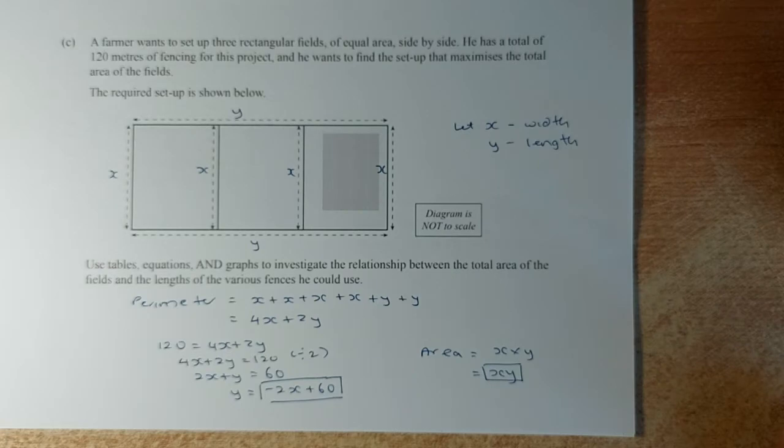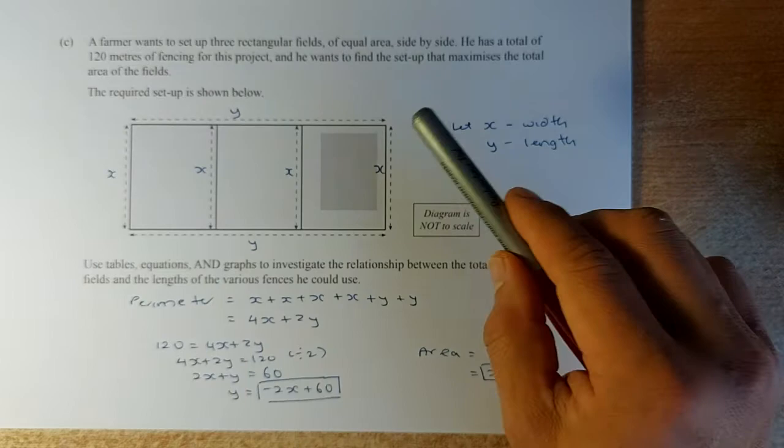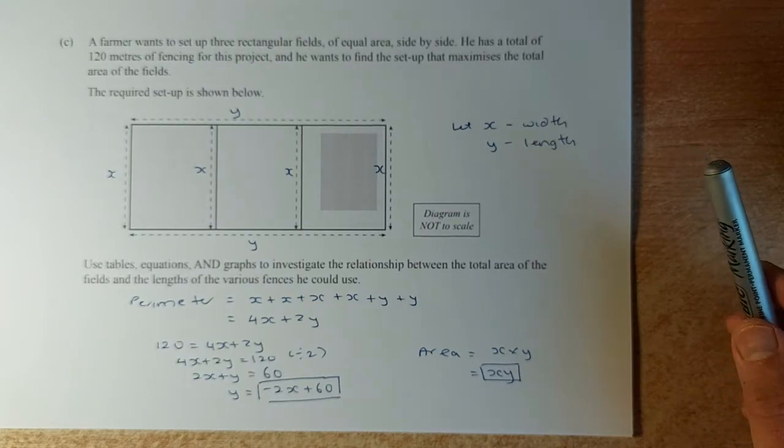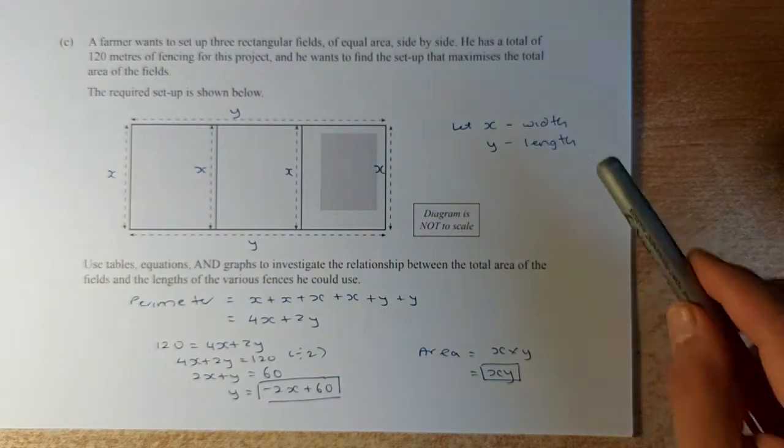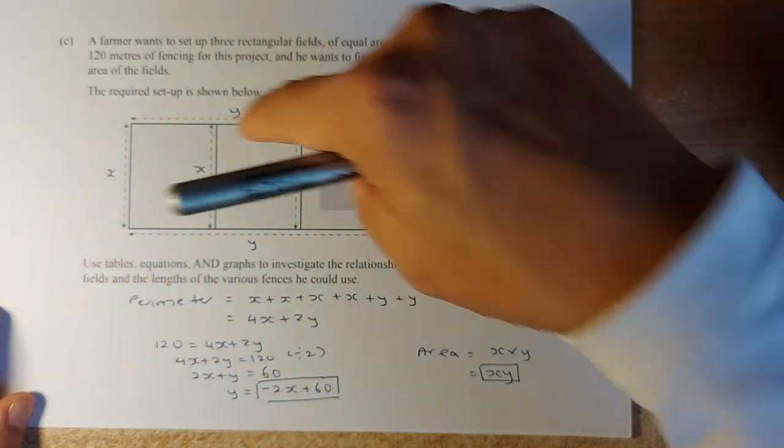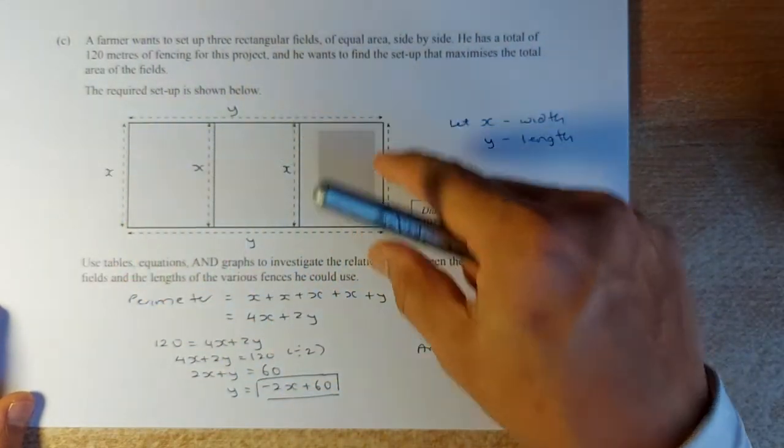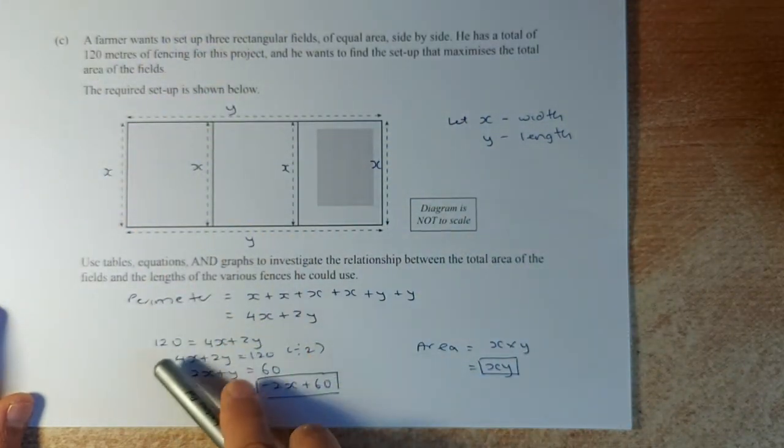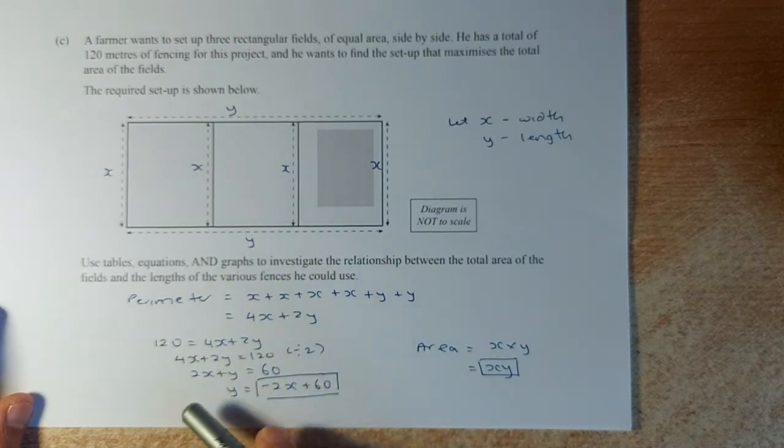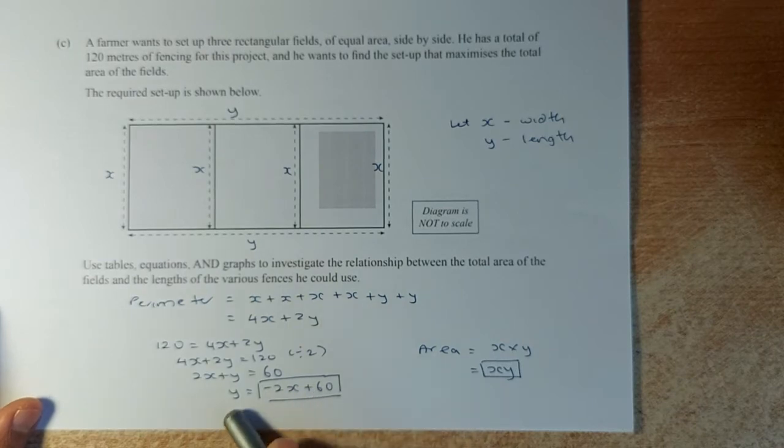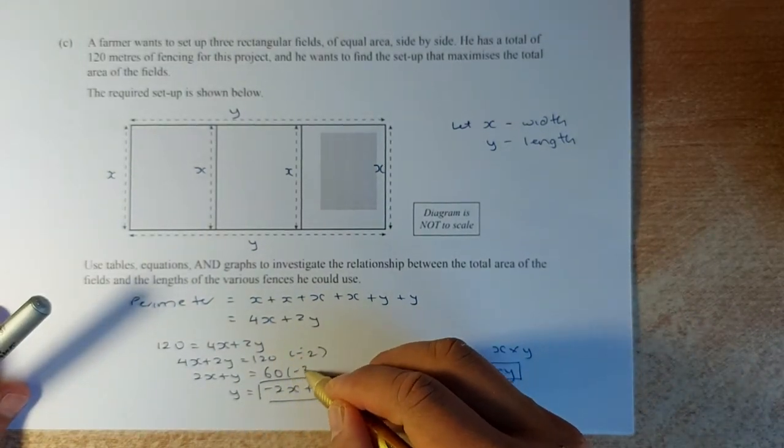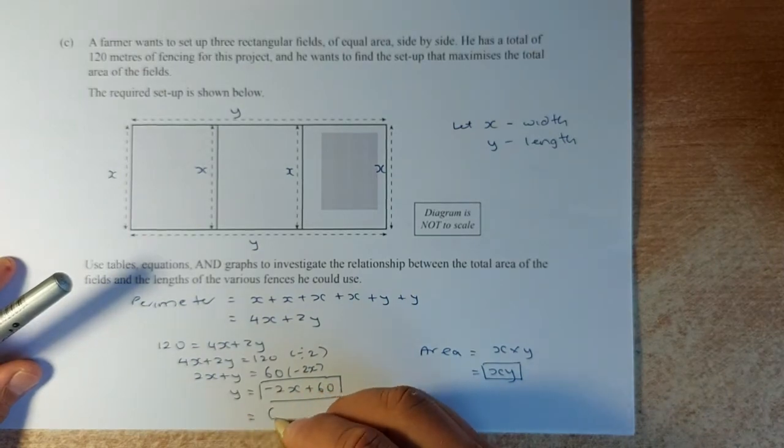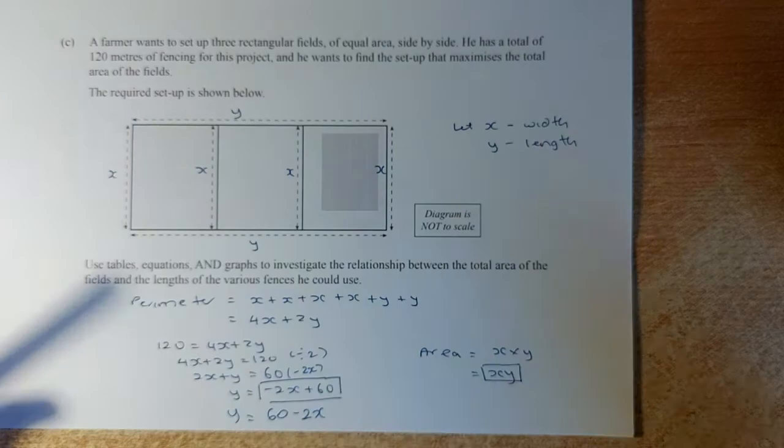A farmer wants to set up rectangular fields of equal area side by side. He has a total of 120 meters of fencing and wants to find the setup that maximizes the total area of the field. We're going to let x be the width, so there are four x's, and the length is y. The perimeter is 4x plus 2y equals 120. Dividing by 2, we get 2x plus y equals 60. Rearranging, y equals 60 minus 2x.